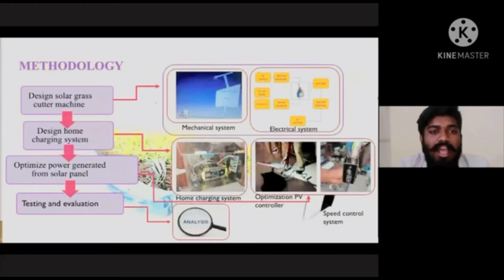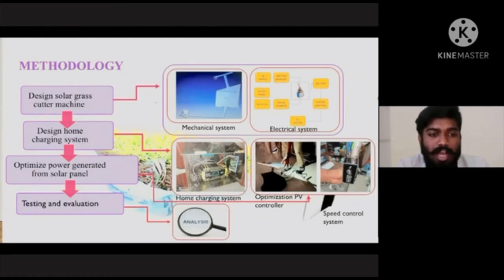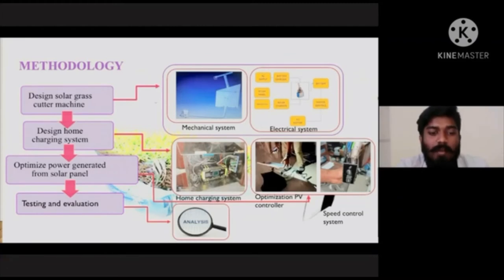Next, I would like to explain about Methodology. First is Design of the Solar Grass Cutter Machine — the pictures show the design of the mechanical system and electrical system. Second, Design of the Home Charging System — the picture shows our home charging system. Third, Optimize Power Generated from Solar Panel — this picture shows the optimization PV controller and speed controller system. Lastly, testing and evaluation — we made an analysis about the project.